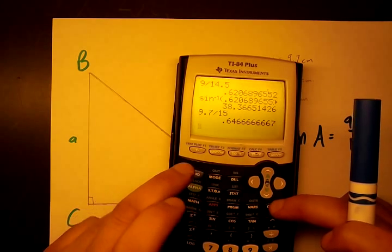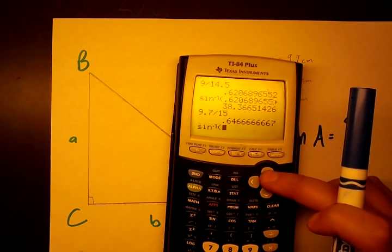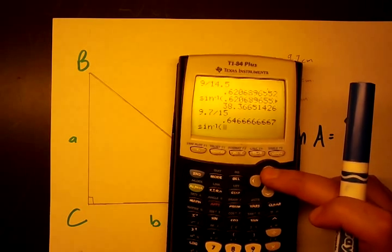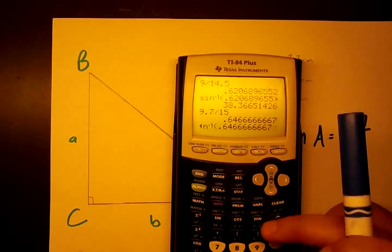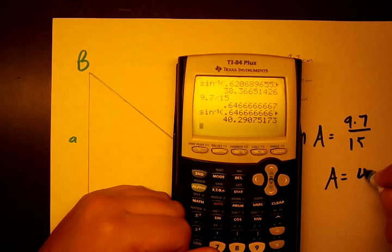Using this, we're going to find the angle that corresponds to this. We're going to hit second, the sine button. That's going to give, looks like sine to the negative one, but it's inverse sine. Put in that number, and we're going to get that angle. So according to this, A equals 40.3 degrees.